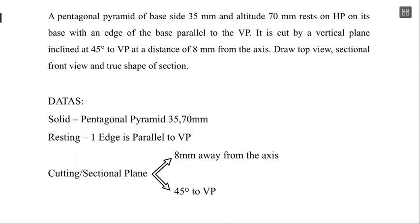Let me get into the problem. A pentagonal pyramid of base side 30mm and altitude of 70mm rests on HP on its base with an edge of the base parallel to VP. It is cut by a vertical plane inclined 45 degrees to VP at a distance of 8mm from the axis. Draw the top view, sectional front view, and true shape of the section.